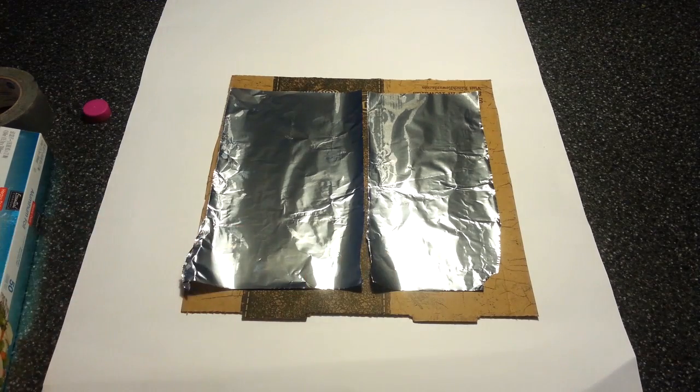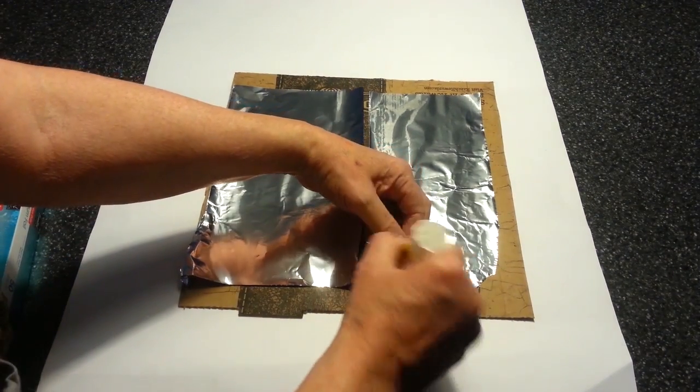Check for any spots where the foil isn't attached to the cardboard and add some glue under those spots.